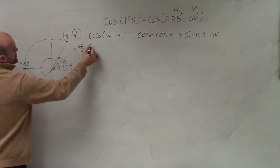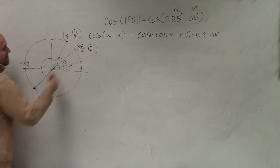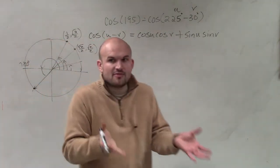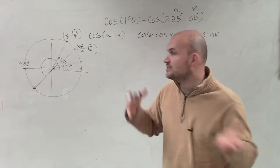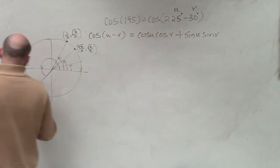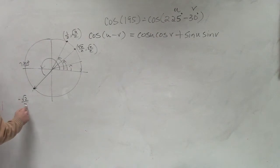which is square root of 2 over 2, comma, square root of 2 over 2. So if I was going to take that coordinate point and throw it into the third quadrant, I know that both the x and the y are going to be negative. So that's negative square root of 2 over 2, comma, negative square root of 2 over 2.